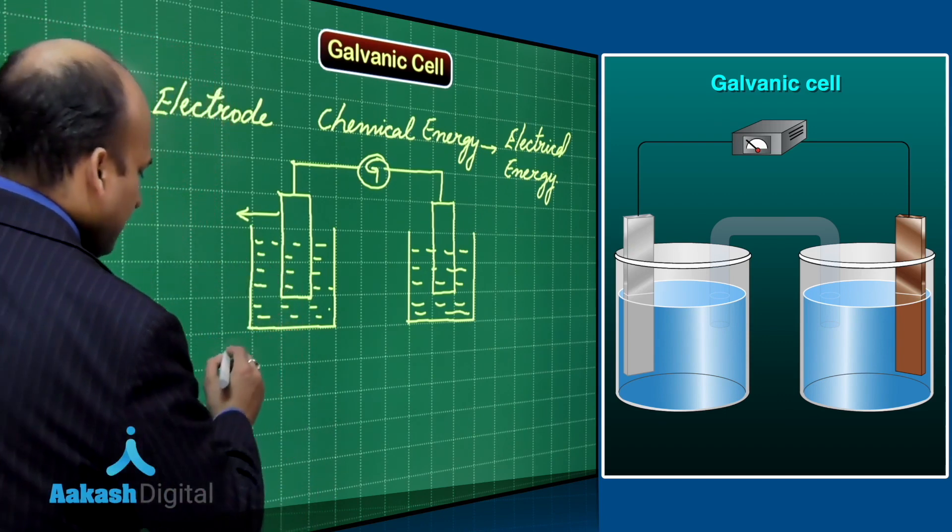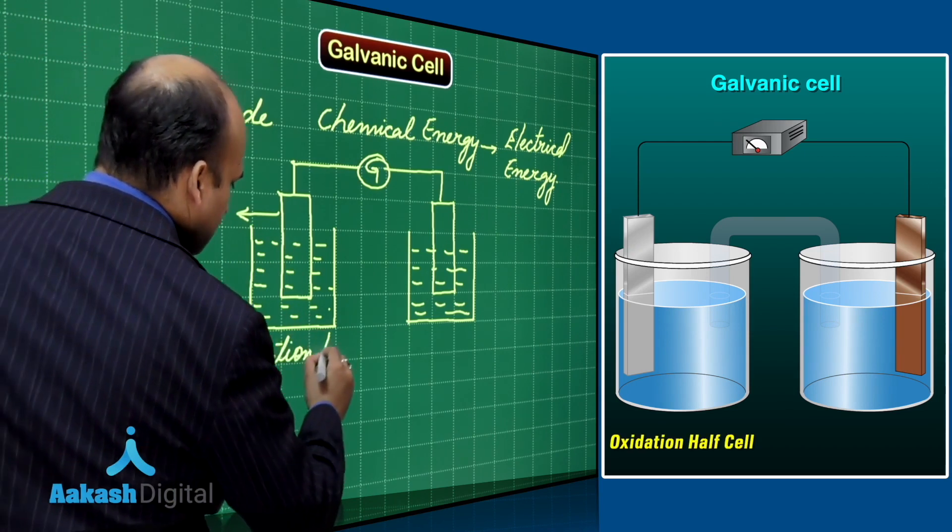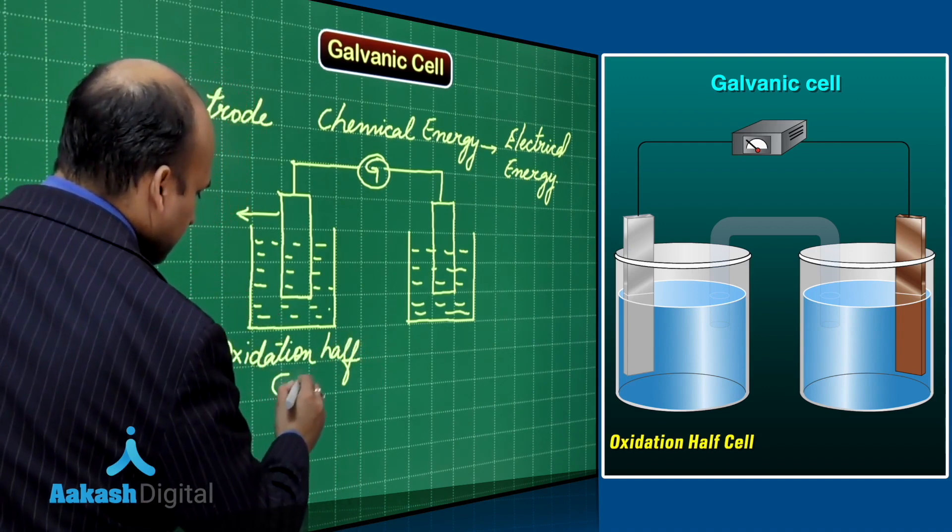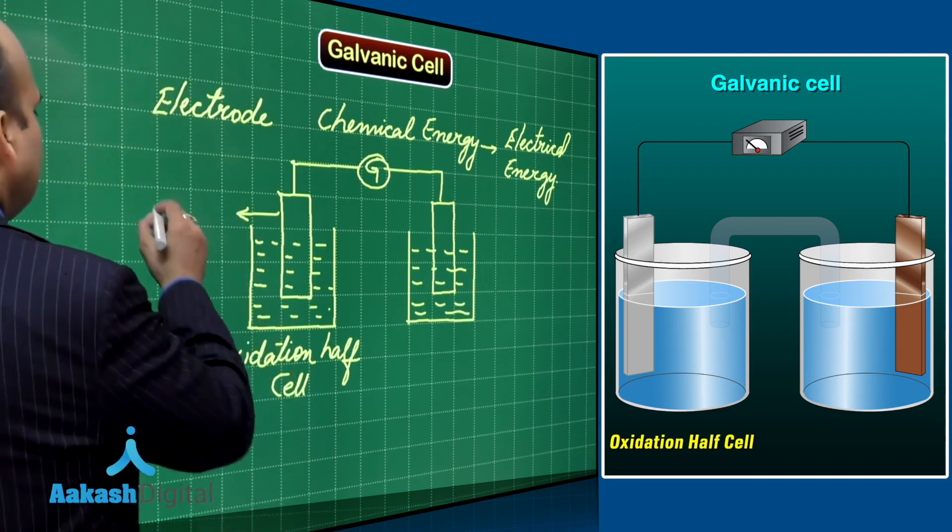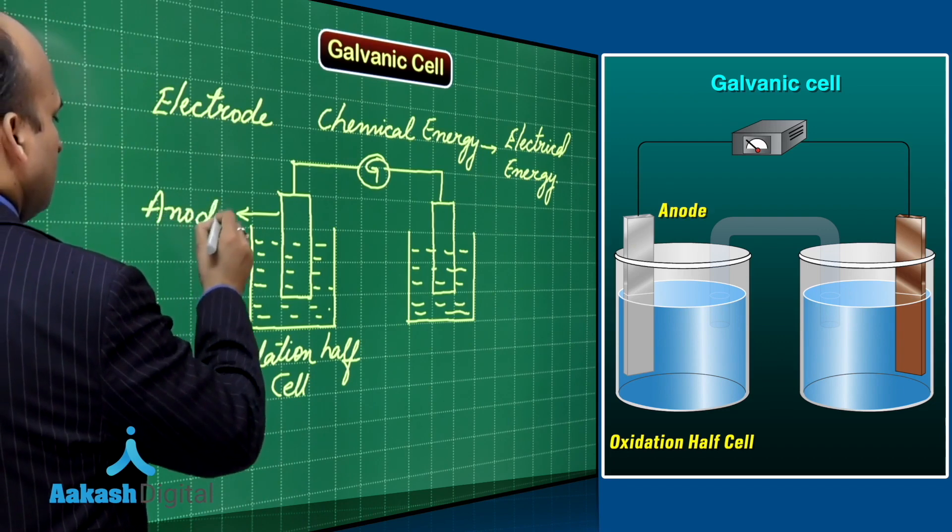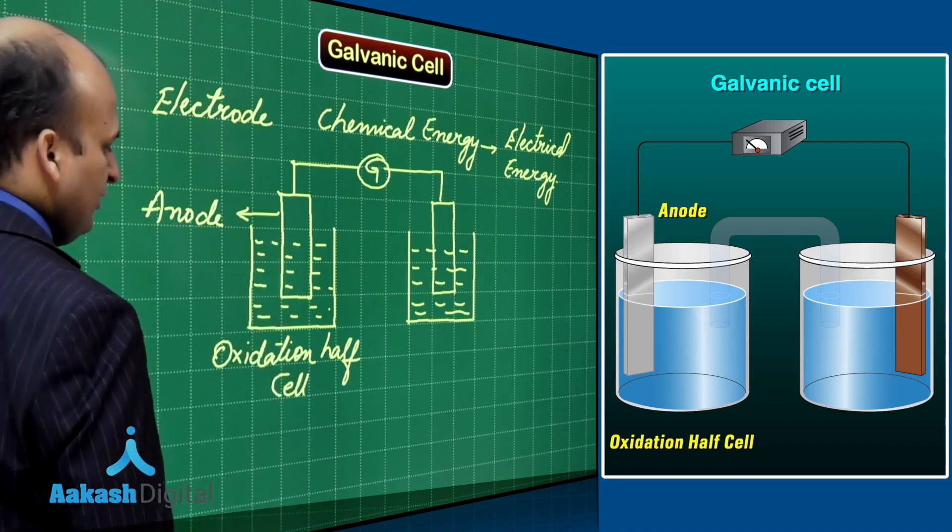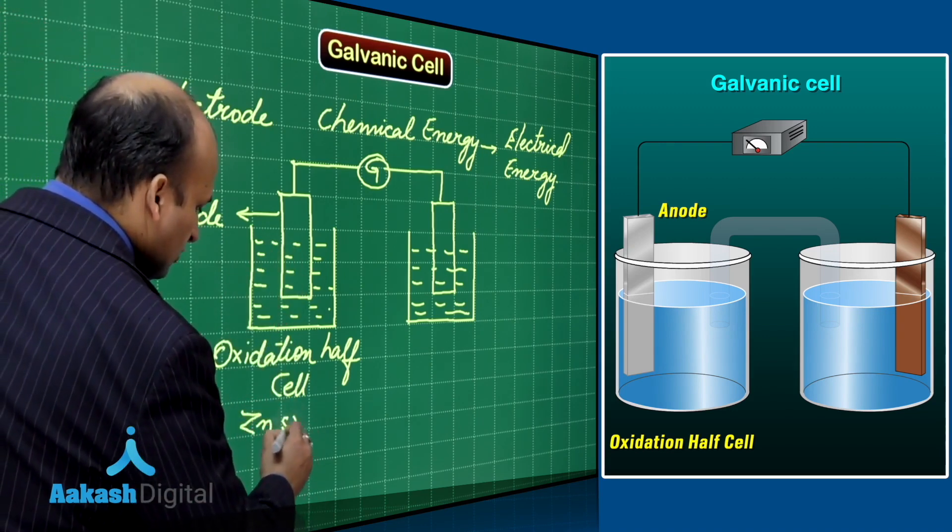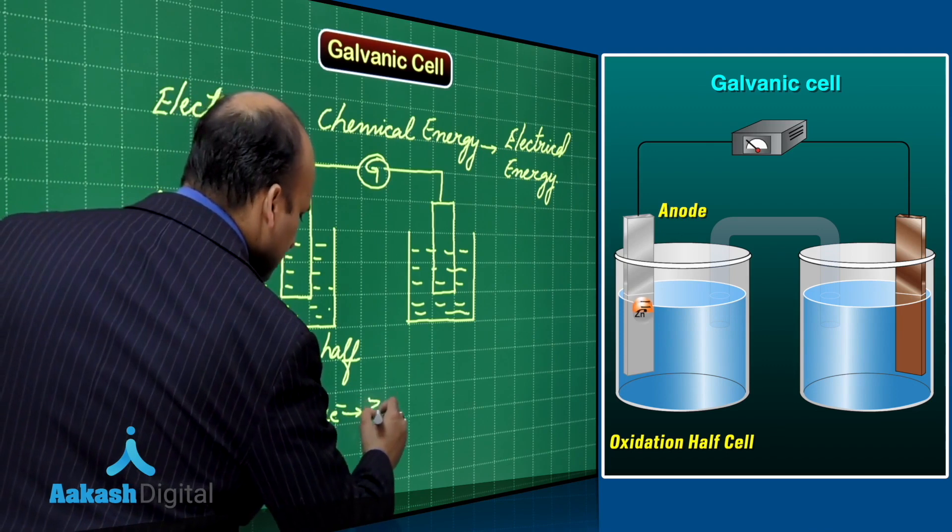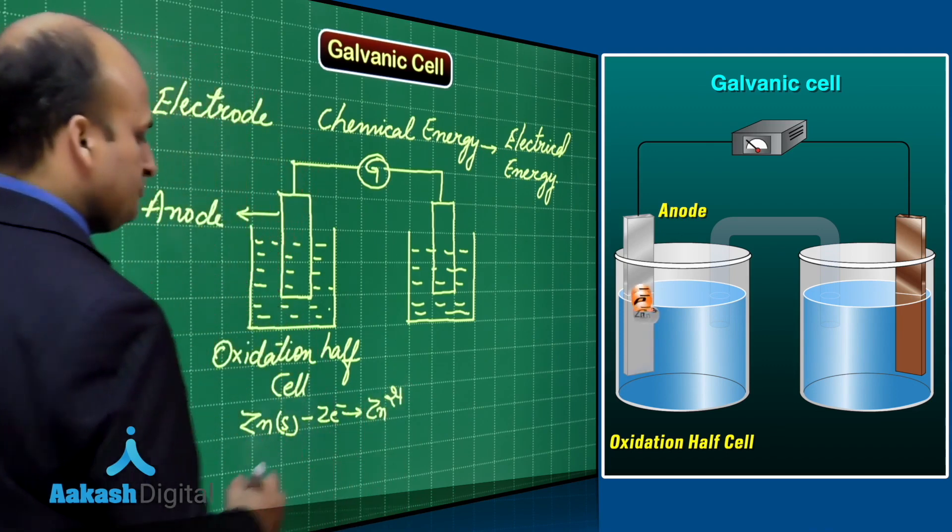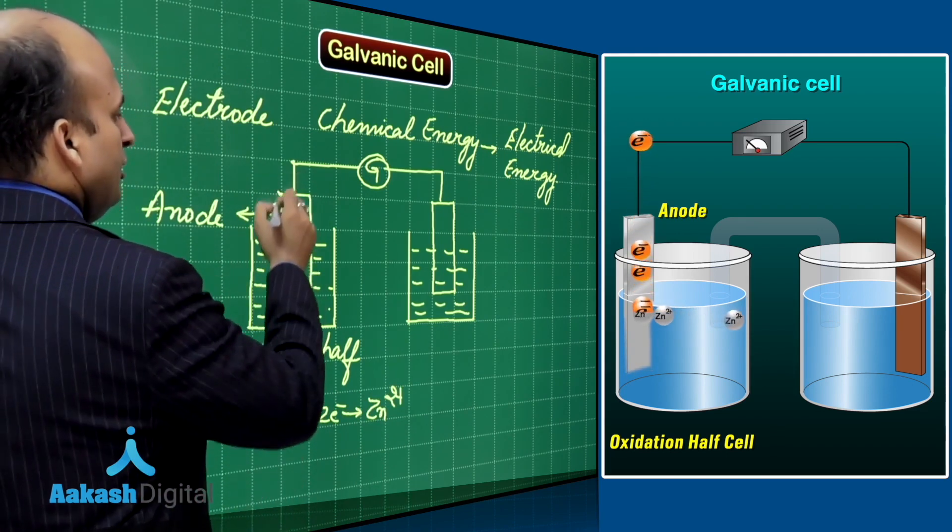That is why this cell is termed as oxidation half cell. In terms of electrochemistry, the electrode which is showing oxidation is referred as anode. If I want to show it with the help of a chemical reaction, I will say, supposing that I have taken zinc over here, the rod is of zinc. This zinc releases two electrons to form Zn²⁺ ions. So, the two electrons which are collected over here, suppose these are the electrons.